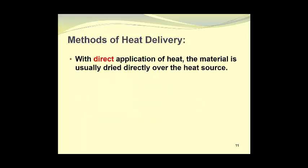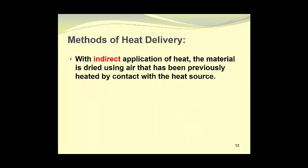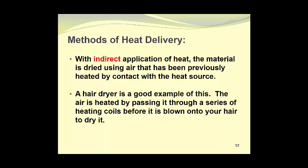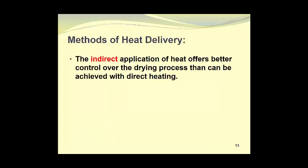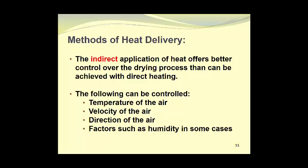With the direct application of heat, the material is usually dried directly over the heat source. Drying material over a fire is probably the best example. With indirect applications of heat, the material is dried using air that has been previously heated by contact with the heat source. A hair dryer is a good example of this. The air is heated by passing it through a series of heating coils before it is blown onto your hair to dry it. Most dryers use the indirect heating method. The indirect application of heat offers better control over the drying process than can be achieved with direct heating. The following can be controlled: the temperature of the air, the velocity of the air, and the direction of the air. And in some cases, factors such as humidity can also be controlled.